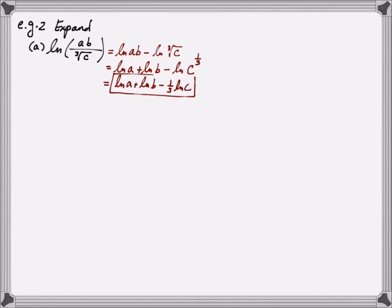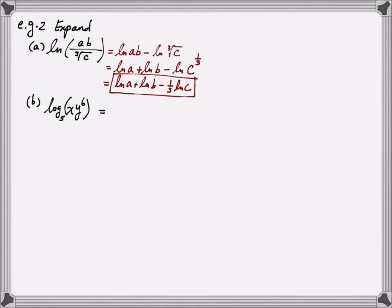Another example: log base 5 of the quantity x times y to the sixth power. A lot of the time, I suggest using parentheses to indicate what is being multiplied together, since all of this is the input to the log function. Without parentheses, someone might misinterpret it as log base 5 of x multiplied by y to the sixth. To expand, use rule number 1 to write it as a sum: log base 5 of x plus log base 5 of y to the sixth power. Then use rule number 3 on the second term to get 6 times log base 5 of y.